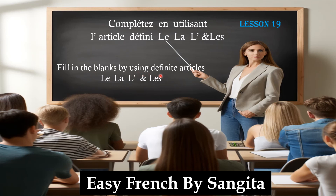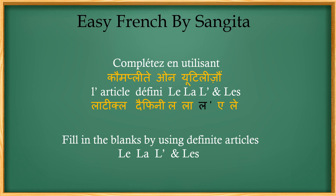Hello friends, today we'll be doing fill in the blanks by using definite articles: le, la, l'apostrophe, and les. My name is Sangeeta from Easy French and today we are doing lesson number 19. Le is the masculine article, la is feminine, l'apostrophe is used before vowels, and les is the plural article.